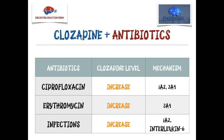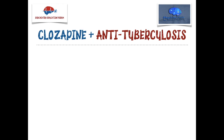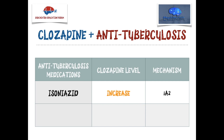Next is our anti-TB medication. The two medications with one case each were isoniazid, which increases clozapine level through inhibition of 1A2, and rifampin, which will decrease it through induction of 1A2 and 3A4. We all know rifampin is well known for induction and reduction of medication levels. Isoniazid is an inhibitor, so it will likely increase the level of clozapine if prescribed together.